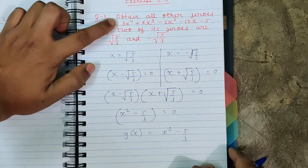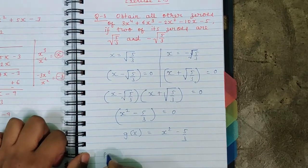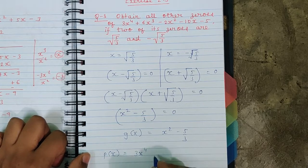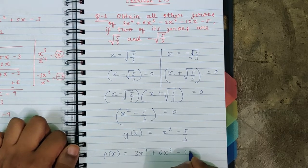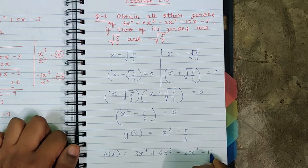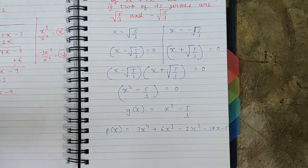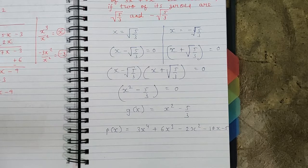Our dividend is p(x) = 3x⁴ + 6x³ - 2x² - 10x - 5. The next step is to divide p(x) by g(x) to obtain the quotient, then using the division algorithm we will find the other zeros.